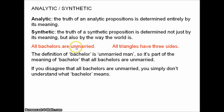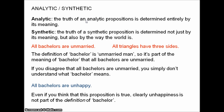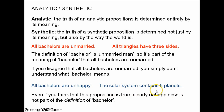On the other hand, consider 'all bachelors are unhappy.' Even if you think this proposition is true, unhappiness is clearly not part of the definition of 'bachelor.' Another example: the solar system contains eight planets. Our definition of 'solar system' doesn't compel us to posit any particular number of planets — we once had nine planets, after all. The truth of this proposition is partially determined by the way our world is, by the nature of the solar system. It's not just about the meanings of the words.